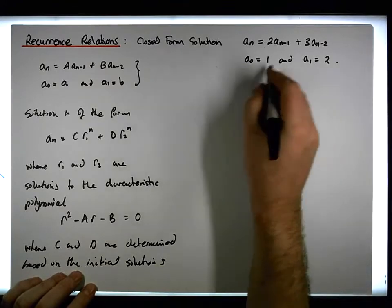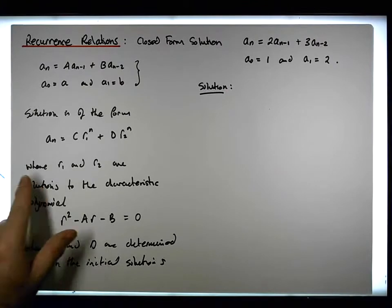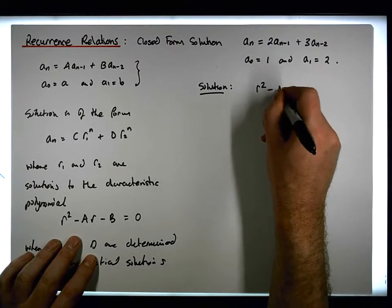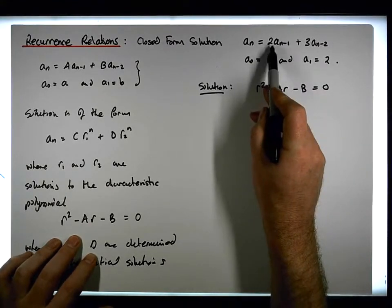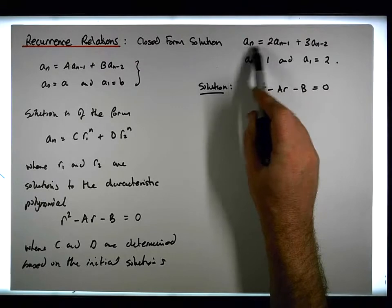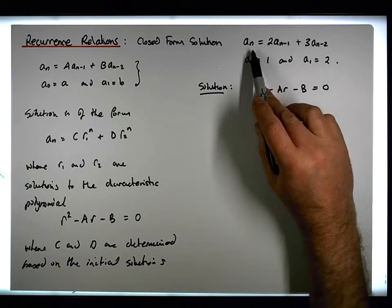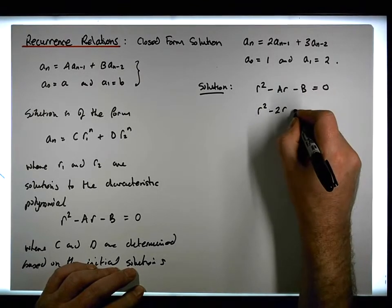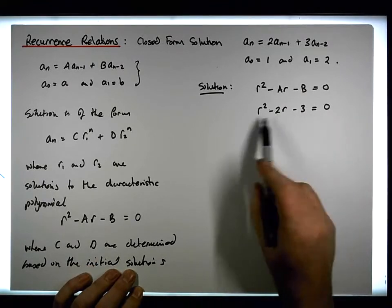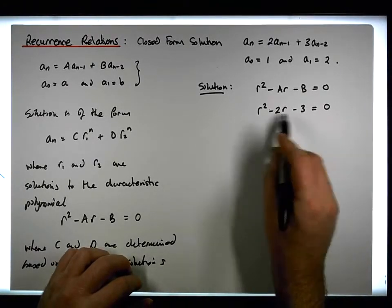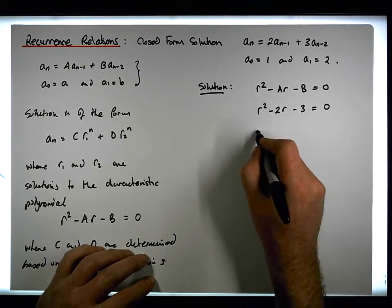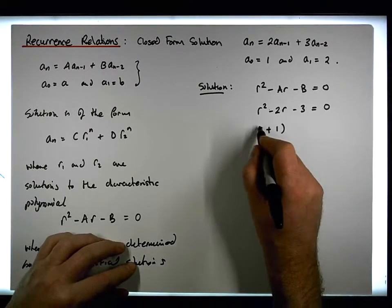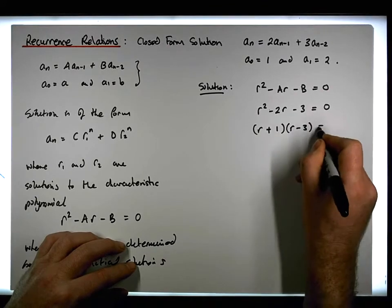Let's start the solution for this particular example. First, we identify the characteristic polynomial. The characteristic polynomial is r² − A·r − B = 0. In our case, the coefficient of the first preceding term is 2, so A = 2, and the coefficient of the second preceding term is 3, so B = 3. Our characteristic polynomial is therefore r² − 2r − 3 = 0. Solving for r, we factor this as (r + 1)(r − 3) = 0.